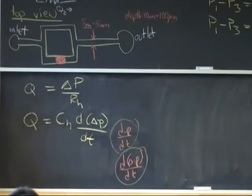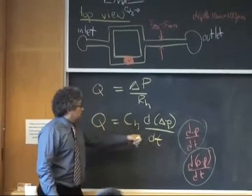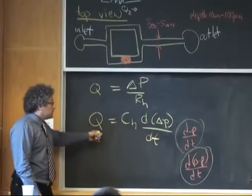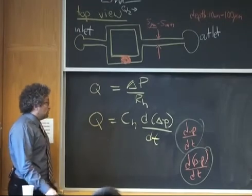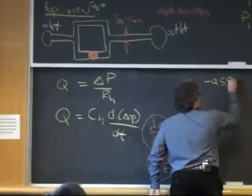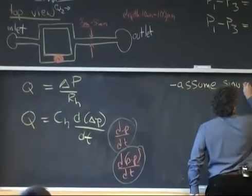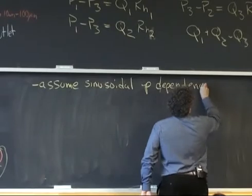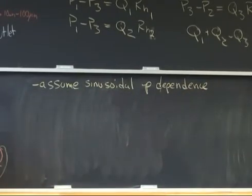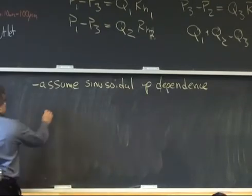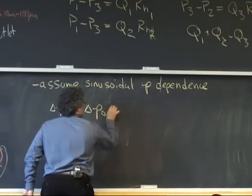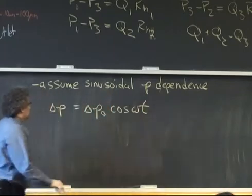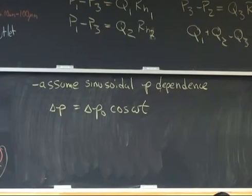If we assume that these volumetric fluxes and pressures take on some specific functional forms with time, this equation in particular can be transformed from a differential equation to an algebraic equation. We start by assuming that our pressure and volumetric fluxes take on a sinusoidal form with time. When we assume delta p equals delta p0 times cosine of omega t, then taking this derivative is straightforward.